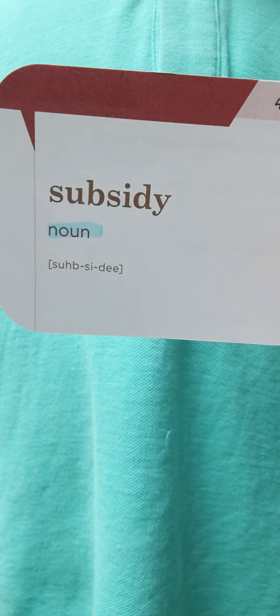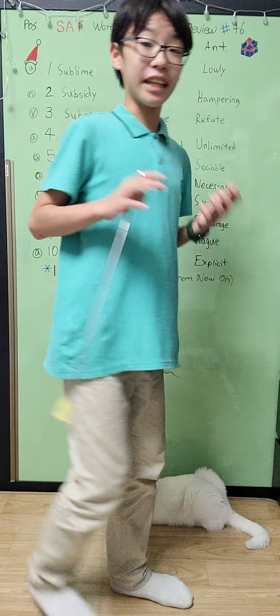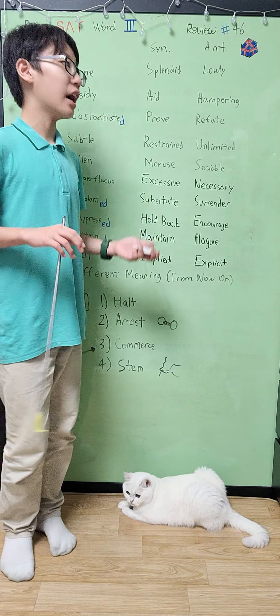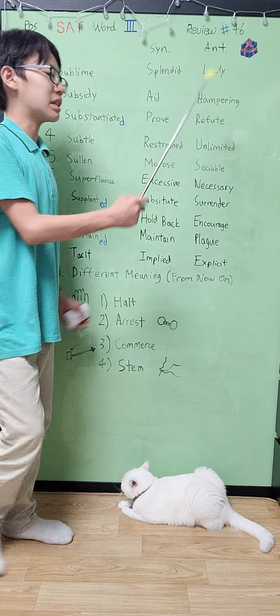The second word is subsidy. Subsidy basically means a grant or contribution of money, like to be an aid or a stock or like a grant of something, a grant of money. The antonym would be a hampering towards something because you're taking away money.